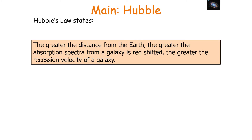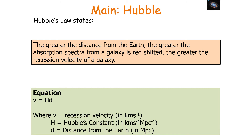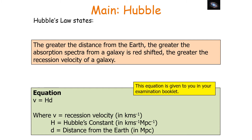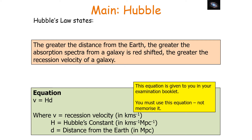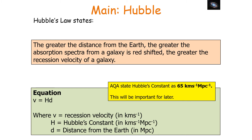Hubble's Law states that the greater the distance from Earth, the greater the absorption spectrum from a galaxy is redshifted, and the greater the recession velocity of a galaxy. The equation for this is V equals HD, where V is the recession velocity, H is Hubble's constant, and D is the distance from Earth. This equation is given in your examination booklet. AQA states that Hubble's constant is 65 kilometres per second per megaparsec. It's very important to have recession velocity in kilometres per second and distance in megaparsecs.